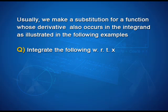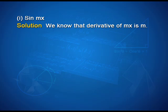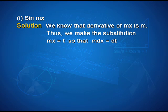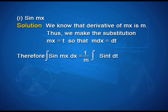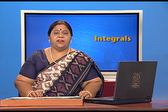Integrate the following with respect to x. First, sin(mx). For integrating sin(mx), we know that the derivative of mx is m. Thus we make the substitution mx = t, so that m dx = dt. Therefore, ∫sin(mx)dx = (1/m)∫sin(t)dt = −(1/m)cos(mx) + c. Therefore, ∫sin(mx)dx = −(1/m)cos(mx) + c, where c is the constant of integration.